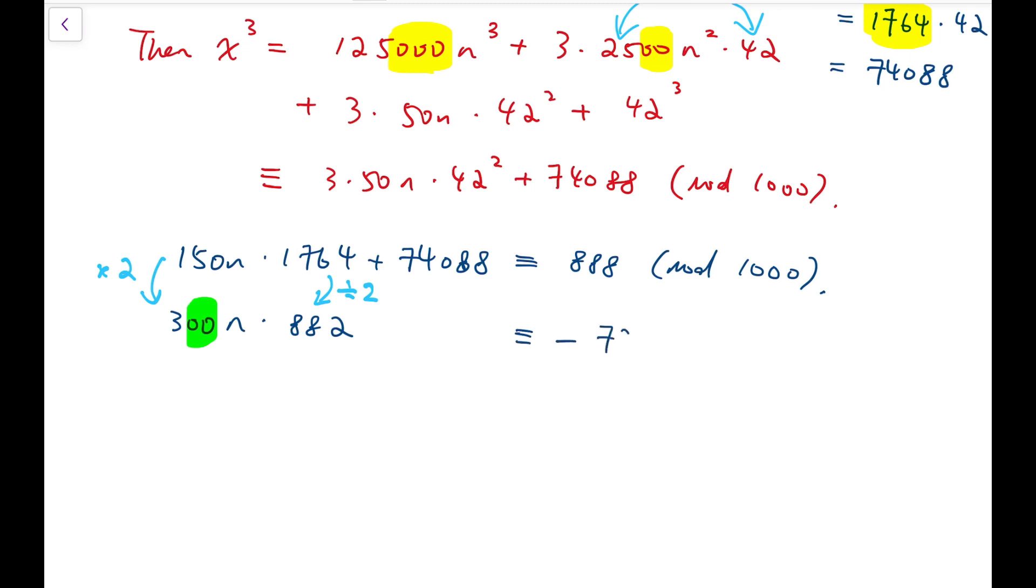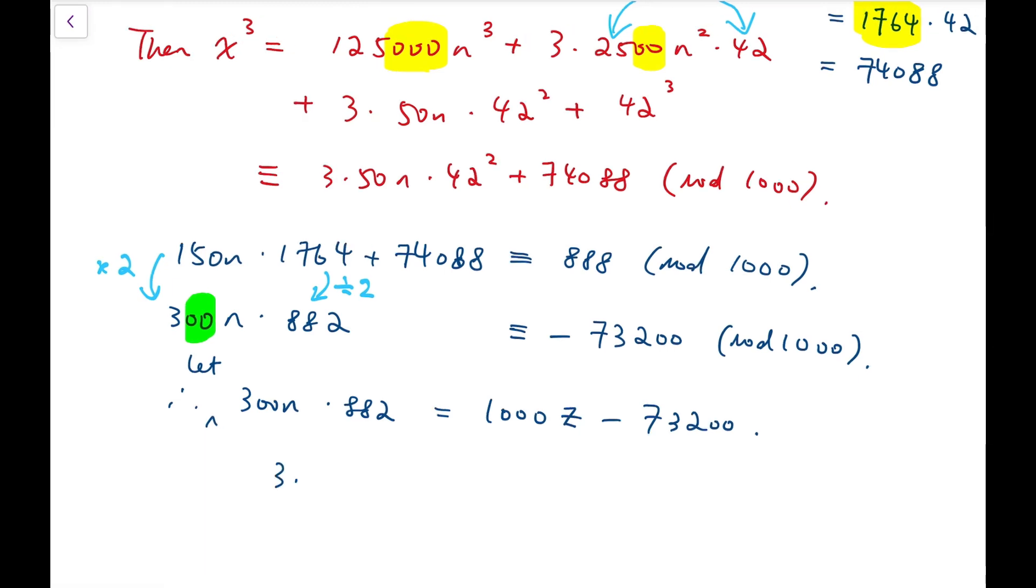And, this term is congruent to minus 73,200 mod 1000. And, then, again, I'm going to rewrite that back into an equation, rather than just congruence in modular arithmetic. I'm going to let this be some multiple of 1000, subtracted by 73,200. I'm going to divide both sides by 200. So, it gives 3 times 441 times n, taking away these two zeros, and dividing this number by 2, equals 5z minus 366.